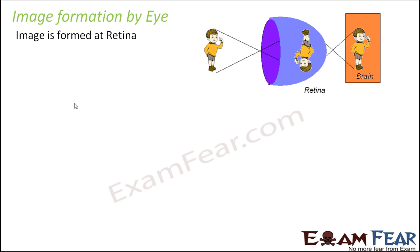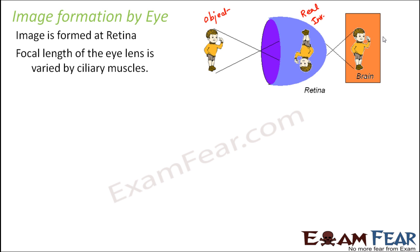The image is formed on the retina. If this is the object we are looking at, the image formed on the retina is going to be real and inverted, because the eye lens forms a real and inverted image. The brain then perceives it in the right way — the real and inverted image travels through the optic nerve to the brain, which corrects it to appear erect.